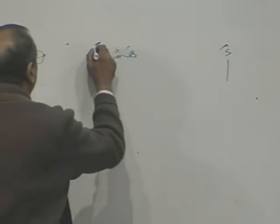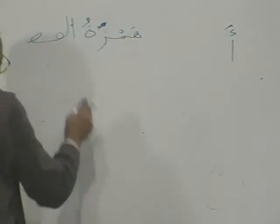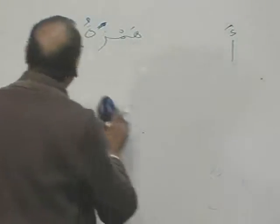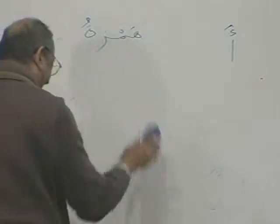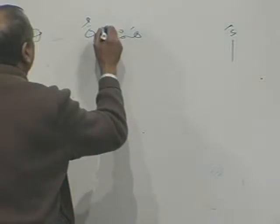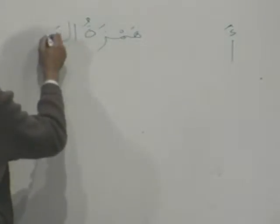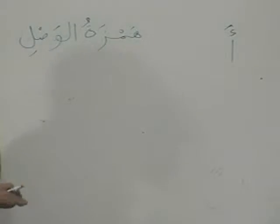Now there are two kinds of Hamza. How many kinds of Hamza? Two kinds of Hamza. The first is Hamzatul Wasal — Hamza of assimilation. And the second one is Hamzatul Qat'.